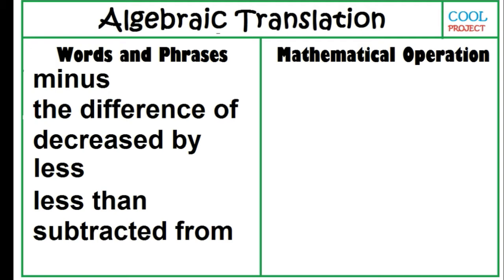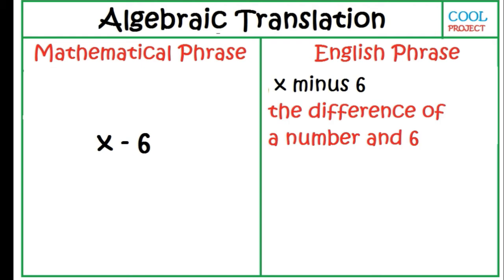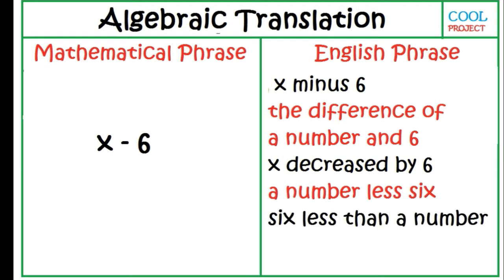The following words and phrases — minus, the difference of, decreased by, less, less than, subtracted from — use a single mathematical operation, which is subtraction. This means that a single mathematical phrase can be translated in many ways. For example: X minus 6. The difference of a number and 6. X decreased by 6. A number less 6. 6 less than a number. 6 subtracted from X.